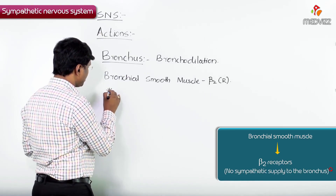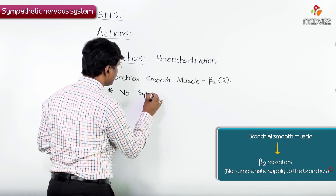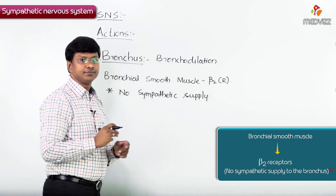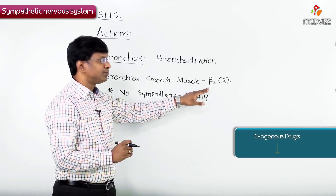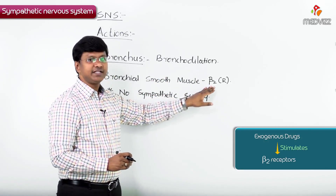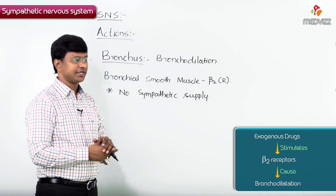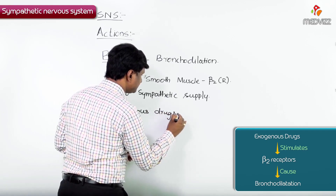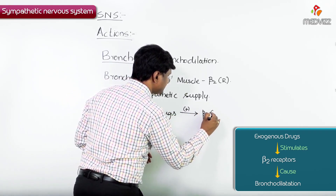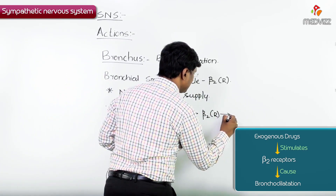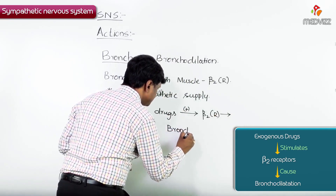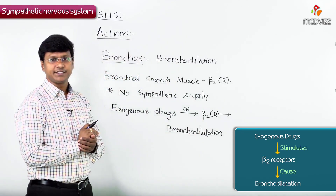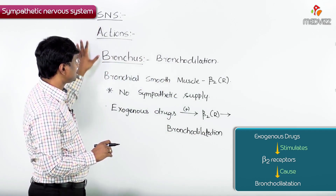There is no sympathetic supply to the bronchus — so how will it cause bronchodilation? When you give exogenous drugs which stimulate the beta-2 receptors, those drugs will stimulate the beta-2 receptors present on the bronchial smooth muscle and that will cause bronchodilation. This is the effect of the sympathetic nervous system on the bronchus.